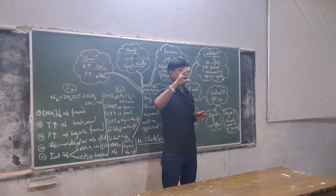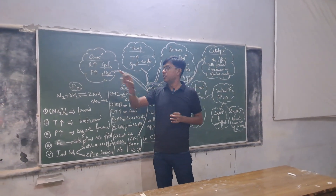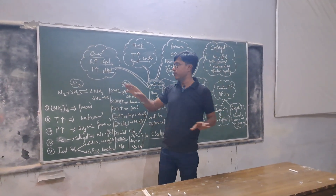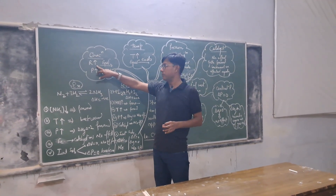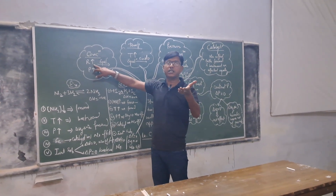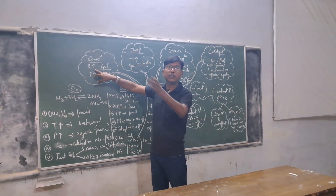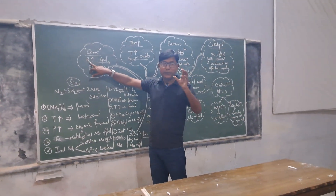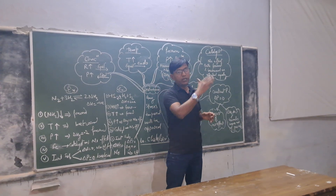The first parameter we can use to disturb equilibrium is concentration. Changing the concentration means either increasing or decreasing the concentration of either the reactant or the product. When the concentration of the reactant is increased, the equilibrium will try to reduce the concentration of the reactant by moving faster in the forward direction, so that what was increased in reactant concentration will be lessened. Therefore, the equilibrium will move in the forward direction.